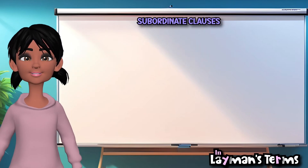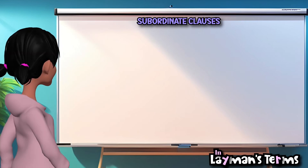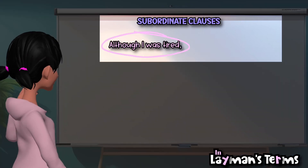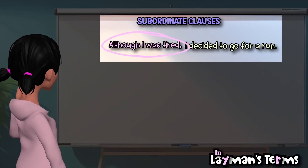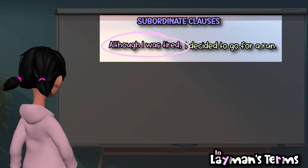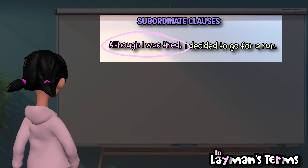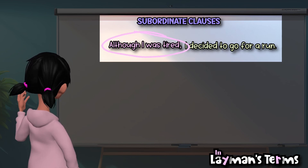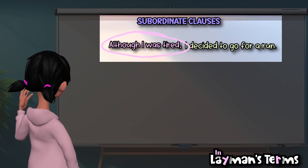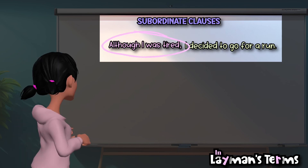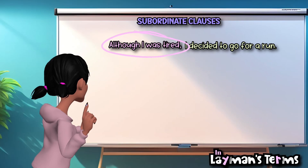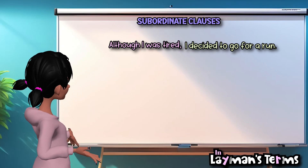Let's dive into some examples. Although I was tired, I decided to go for a run. Here, the subordinate clause, although I was tired, adds additional information about the speaker's state of exhaustion.